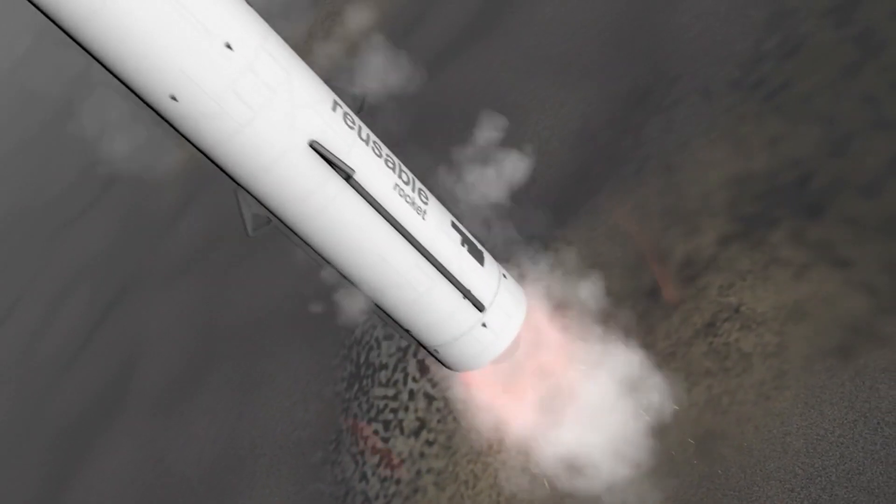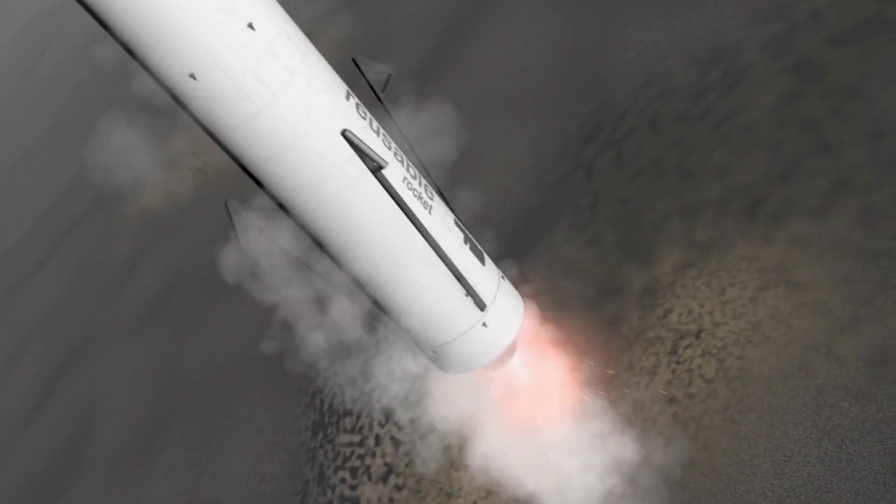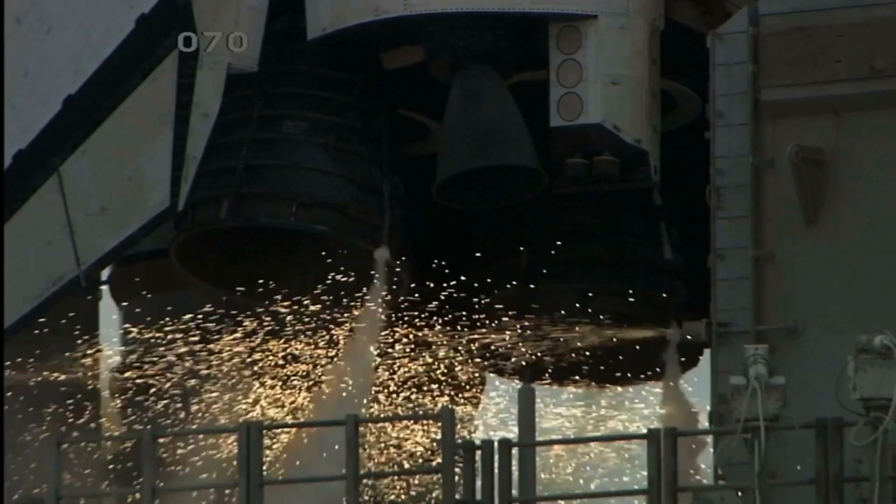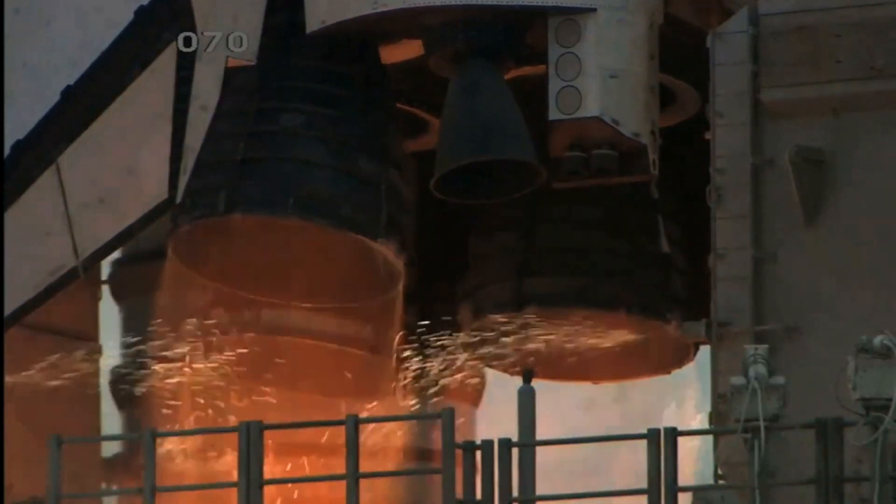A bell-shaped nozzle is used by conventional liquid-fueled rockets to direct thrust. But as the rocket rises, the exhaust begins to veer off course, reducing the rocket's effectiveness.